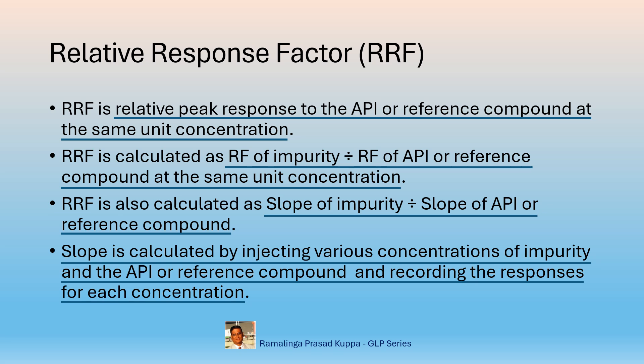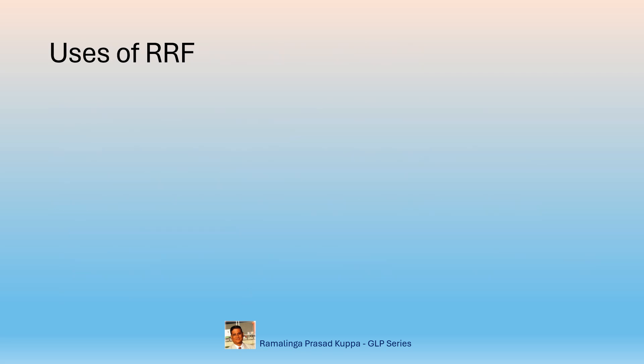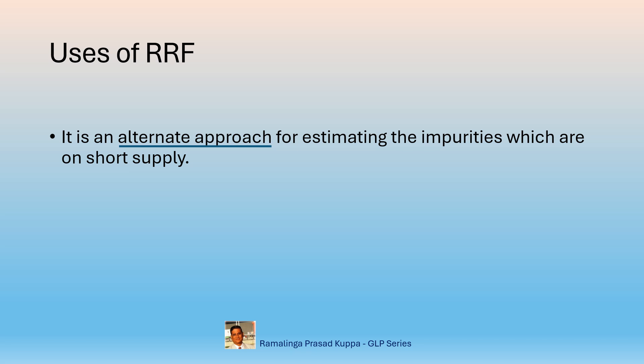Your robotic HPLC automatically provides information on slopes when programmed with RRF replicate injections, but it is important to understand exactly what the response factor and relative response factor mean. RRF is an alternate approach for estimating impurities for which impurity standards are in short supply. Sometimes there will be a shortage of impurities with authorized supply agencies, so the test method provides RRF for accurate estimation of the impurities.